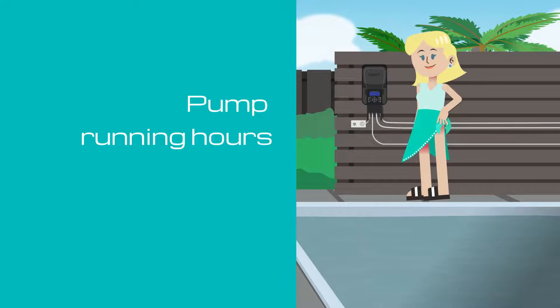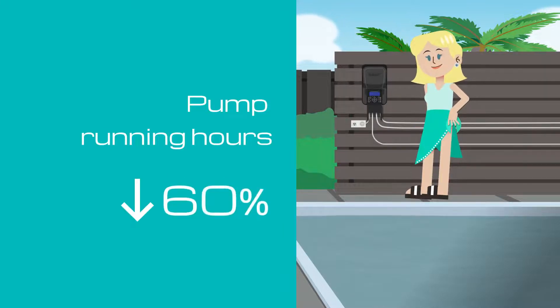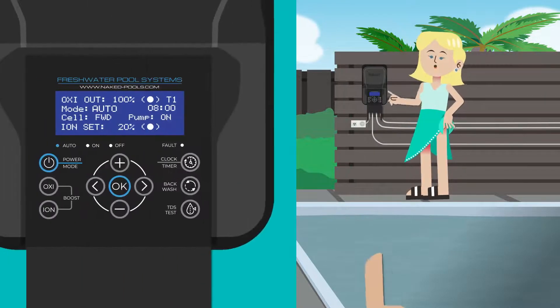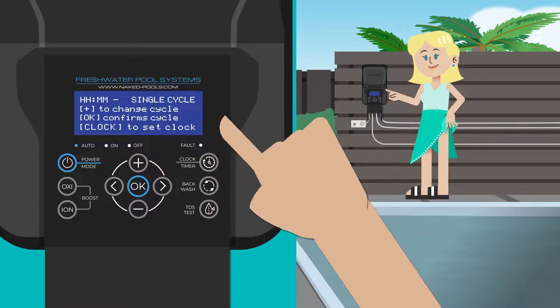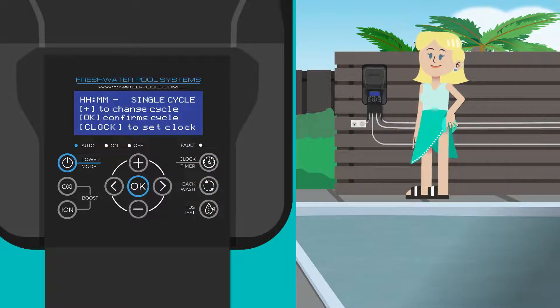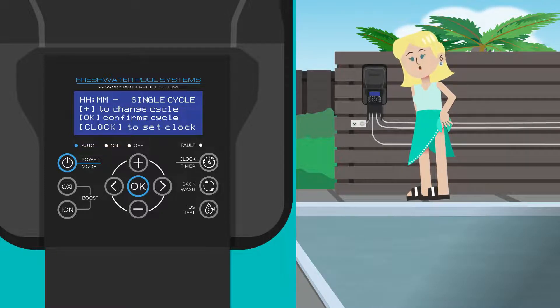Pump running hours can be reduced by as much as 60%, depending on your pool and its location. Select a single cycle timer so the pump run time is reduced. Keep an eye on the clarity of the water and adjust if necessary.